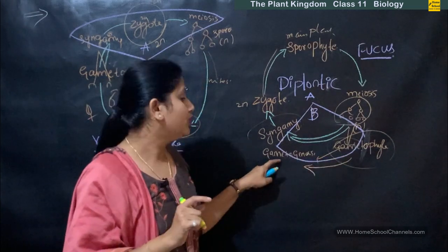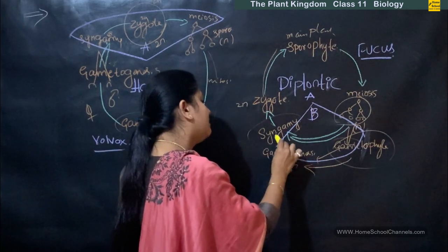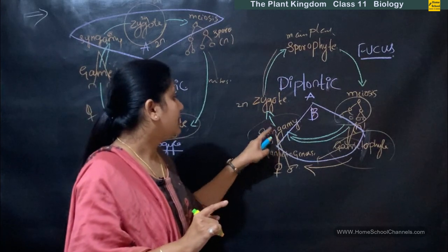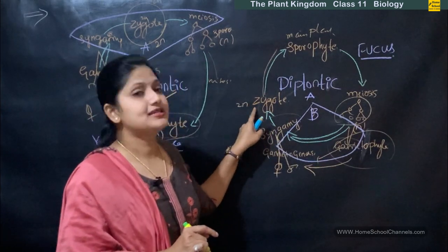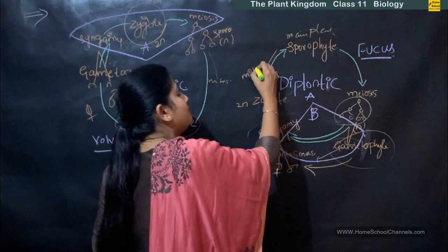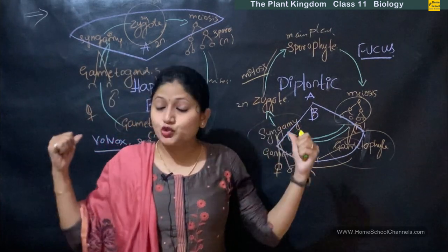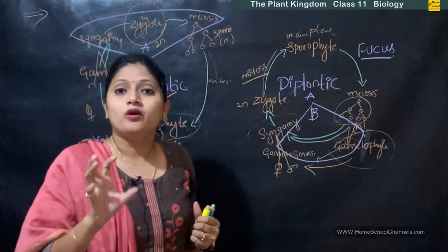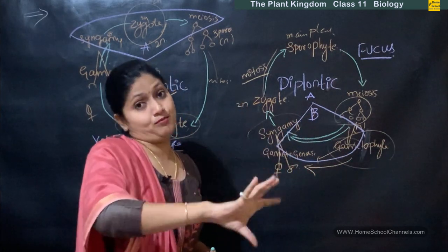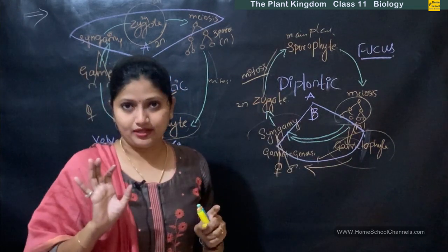The gametophyte gives rise to female and male gametes. These female and male gametes undergo syngamy — that is the fusion of female and male gametes — to form a diploid zygote. This diploid zygote undergoes mitosis to form the sporophyte. So what you should observe: if the main plant body is haploid, it has a haplontic life cycle. If the main plant body is diploid, it has a diplontic life cycle.